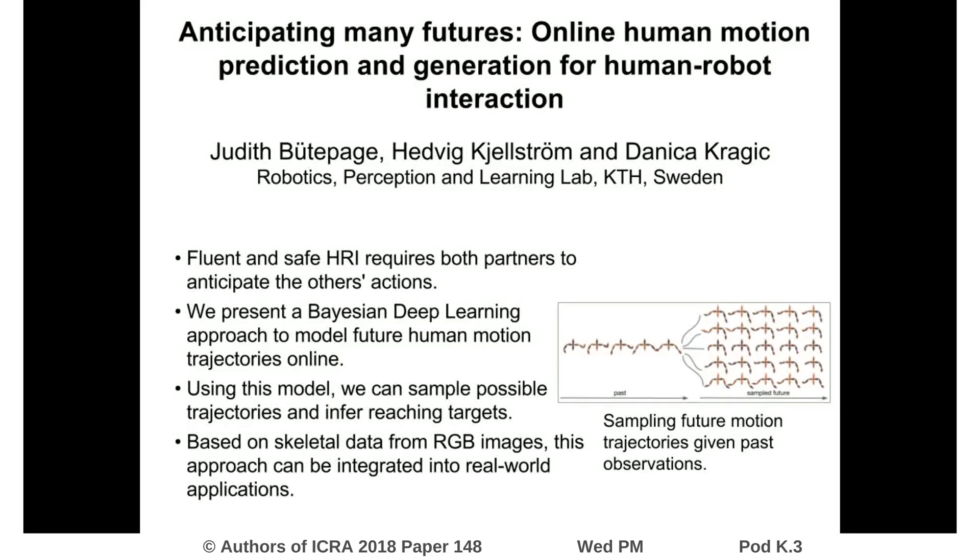Human-robot interaction requires the robot to react to human movement and actions. Therefore, we need to be able to predict different possible future movements.